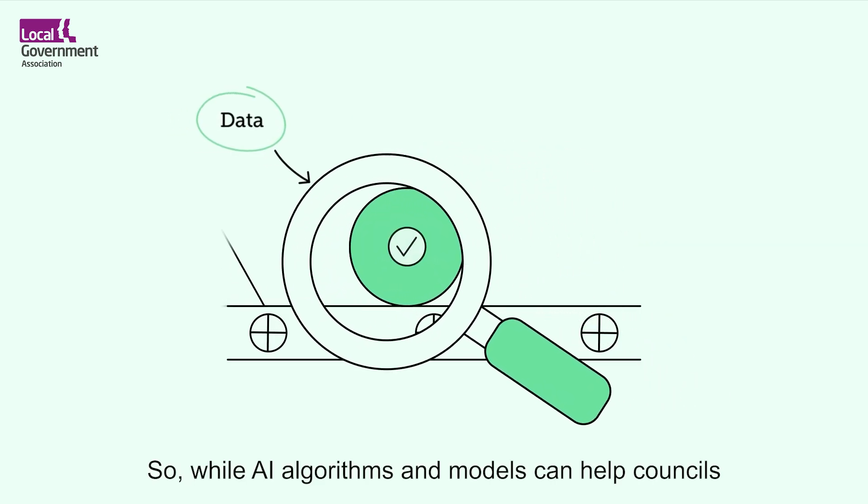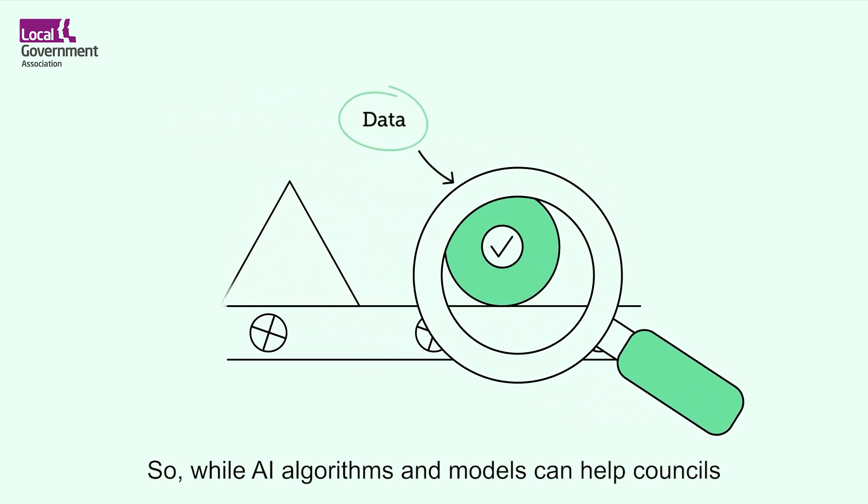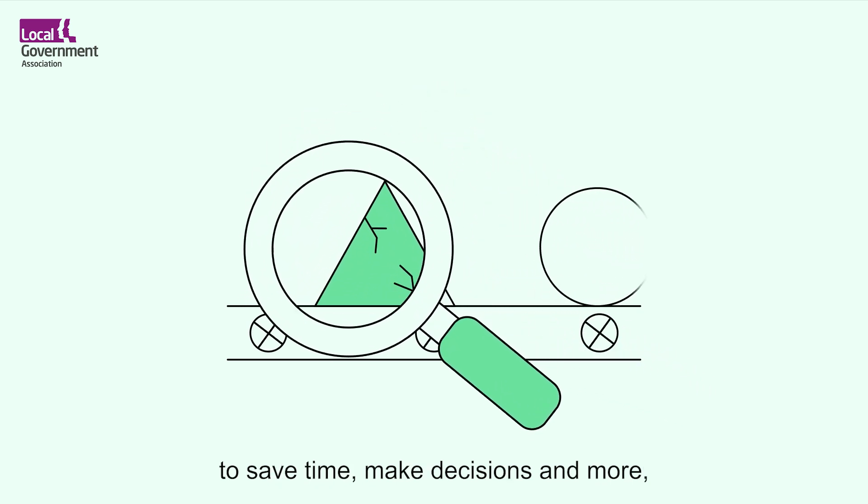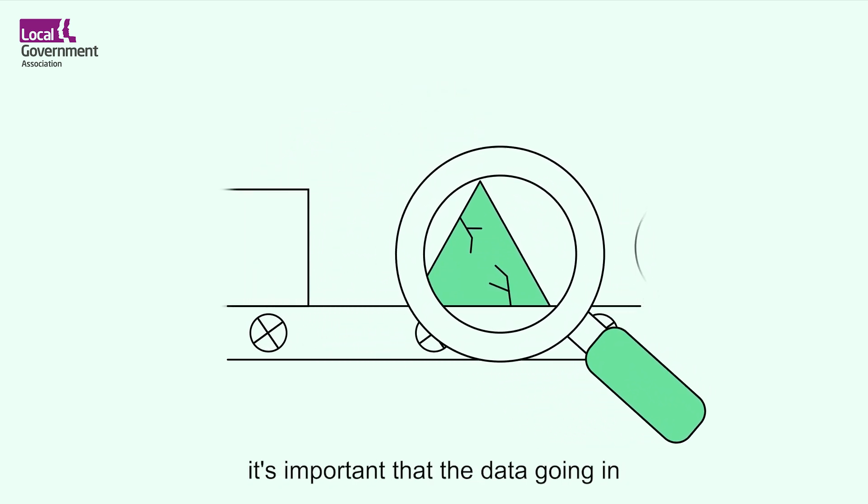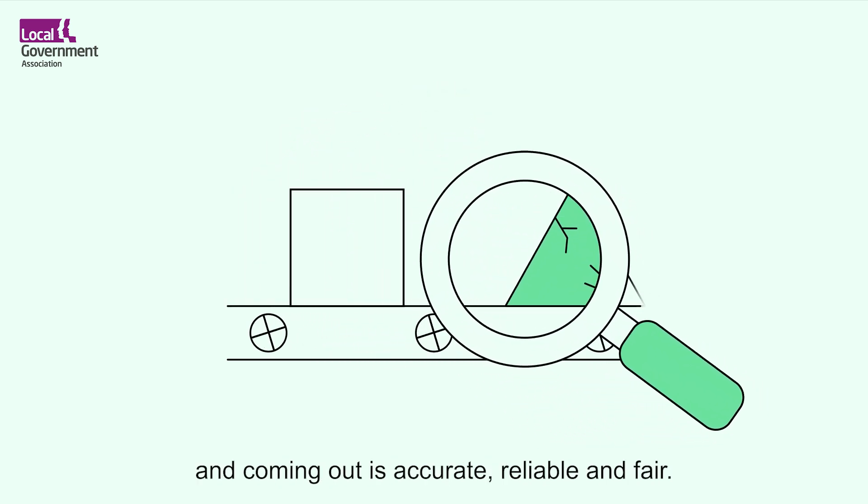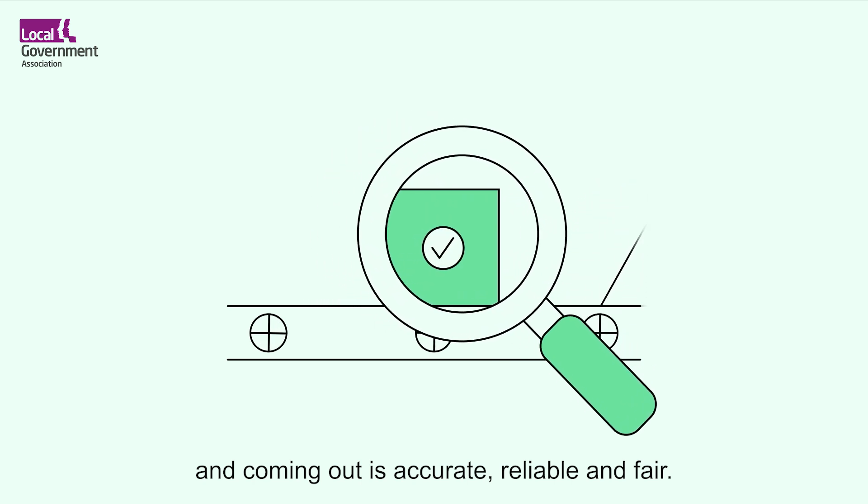So, while AI algorithms and models can help councils to save time, make decisions and more, it's important that the data going in and coming out is accurate, reliable and fair.